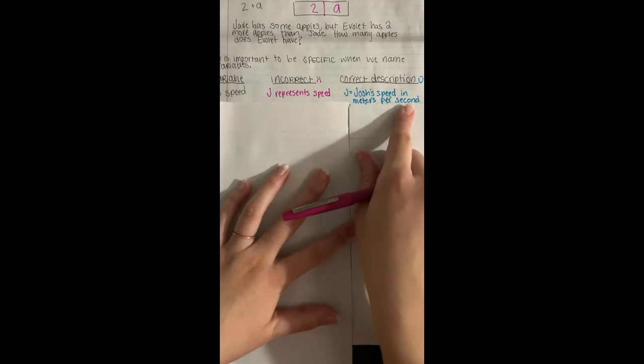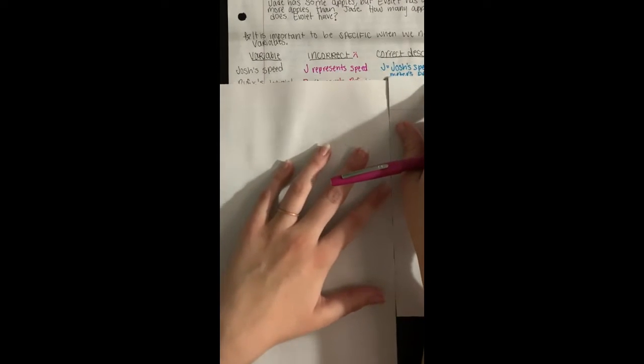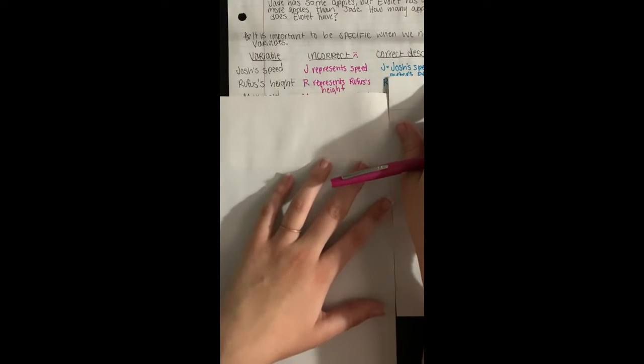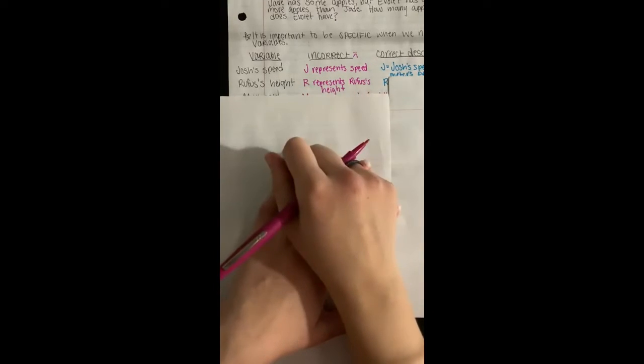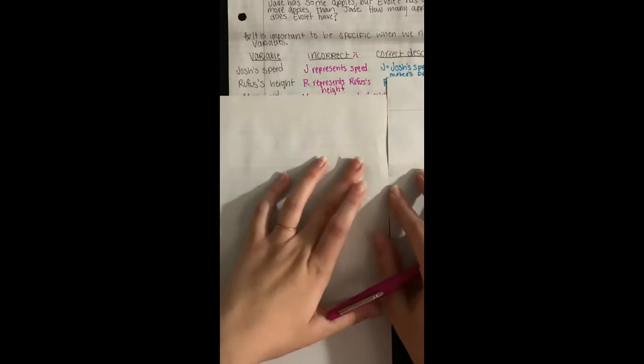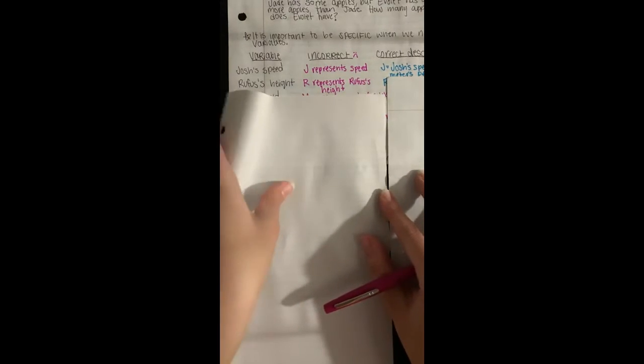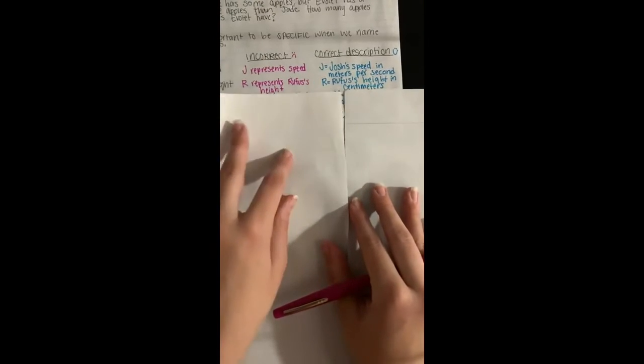Okay, so for the next one we have Rufus's height. So it's not enough to just say I'm gonna use the letter R and R is going to represent Rufus's height. We have to tell how we're measuring his height. So the correct way to say this would be R is Rufus's height in centimeters.